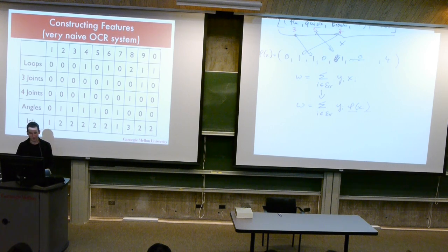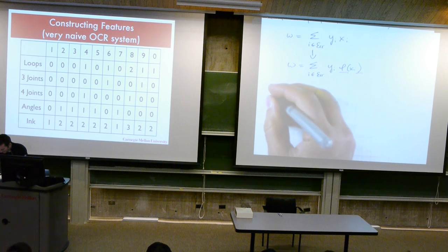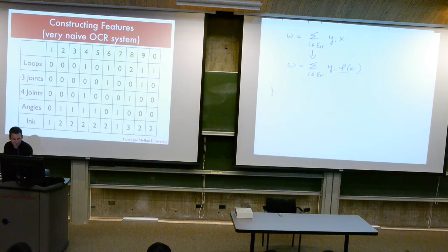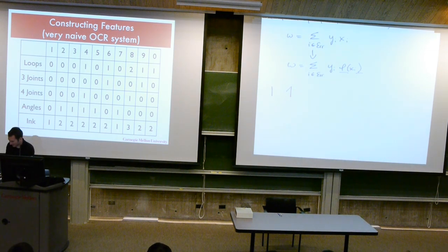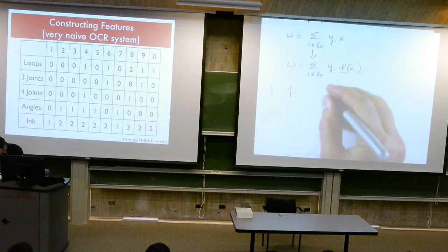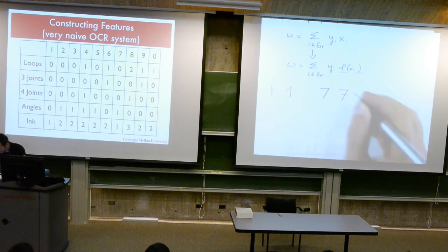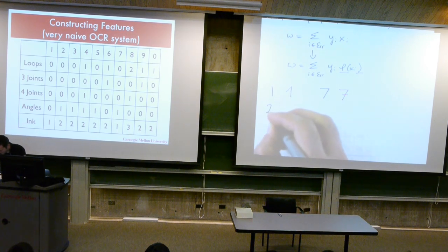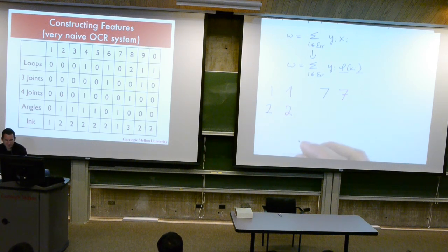Can somebody see something wrong with this approach? This is how Americans write the one. This is how Germans write the one. This is how Americans write the seven. This is how Germans write the seven. Some people write the two like so, some people write it like so. My handwriting is awful, I know. And so on. This is probably less of a problem in Asian languages, where people care about a very standardized way of writing characters. But most of Europe and North America, people write in really horrible ways.